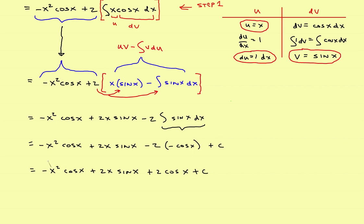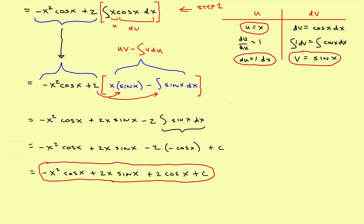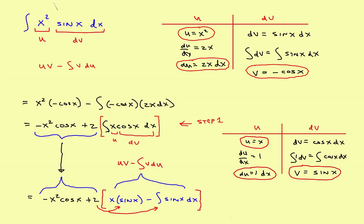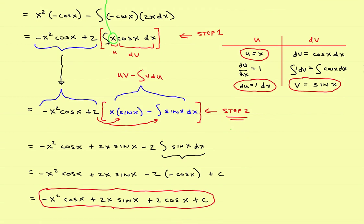The final answer is negative x squared times cosine of x, plus 2x times sine of x, plus 2 times cosine of x, plus c. We'll box that as the final answer. That one took two steps — starting with x squared, the first integration by parts dropped it to a single x, requiring a second step. So the first example took one step, and the second example took two steps — that shows you how to handle integration by parts using trig.